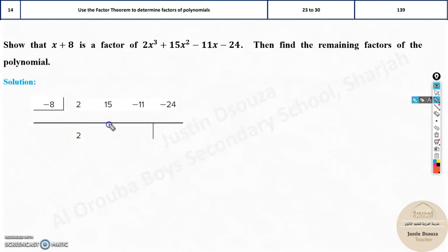Step one is bringing this down over here as it is. 2 comes down. Then once this is down, all you need to do is multiply it with negative 8 and then write it over here. So multiply 2 times negative 8, it's negative 16. Write it over here.